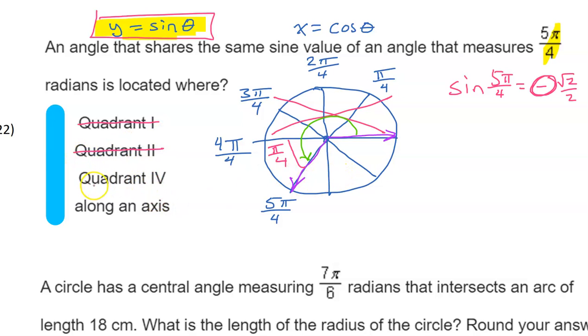So the only options are quadrant 4 and along the x-axis. We know the answer is going to be quadrant 4 because this is the other place that also has a reference angle of π over 4. It's the same reference angle, so it's still going to be negative radical 2 over 2, and it will still be negative because sine is negative in the fourth quadrant.